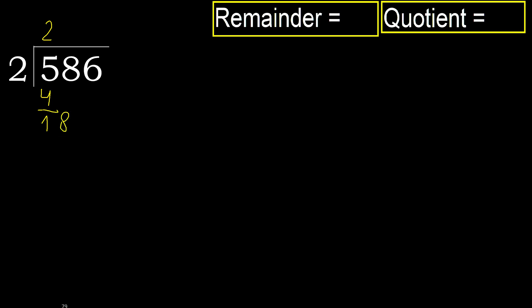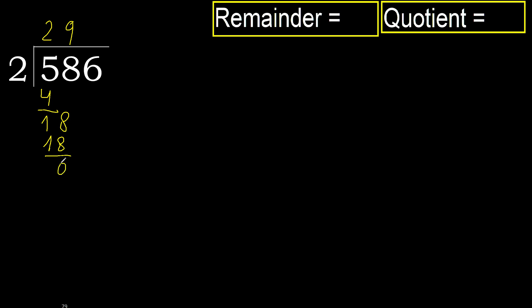18. 2 multiply by 9 is 18, is not greater. Ok. Subtract: 18 minus 18 is 0. Next.